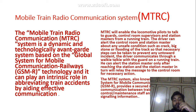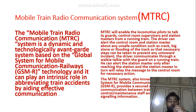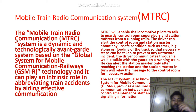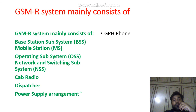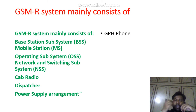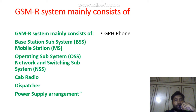The MTRC system, also known as the Global System for Mobile Communications in Railway, provides a secure means of communication between train crew, control, and maintenance staff, and for carrying signaling information. In MTRC, generally a GPH phone is used and the system is based on GSM-R.